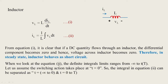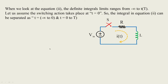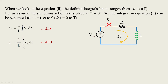Looking at equation 2, the definite integral limits range from minus infinity to the required time t. Let us assume switching action takes place at t = 0. The integral in equation 2 can be split: from t = −∞ to 0 representing the past history, and from t = 0 to t representing the present. Taking equation 2, iL = (1/L) ∫ vL dt, and applying the finite limit conditions from −∞ to t.